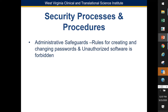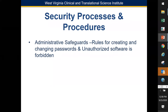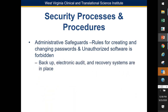Let's look at administrative safeguards first. These include rules for creating and changing passwords — for example, we can't use part of our name because it would be easy to guess. Unauthorized software is forbidden; if you need something, you have to go through HSC IT to make sure it's authorized software. Administrative safeguards also require backup, electronic audit trails, and a recovery system — all of that needs to be in place.